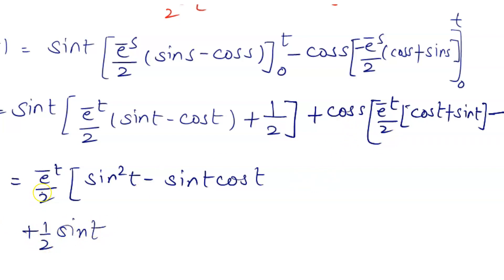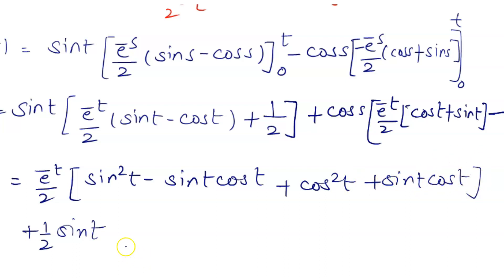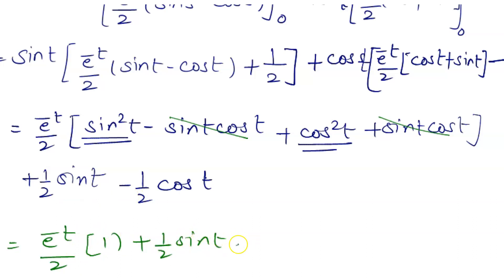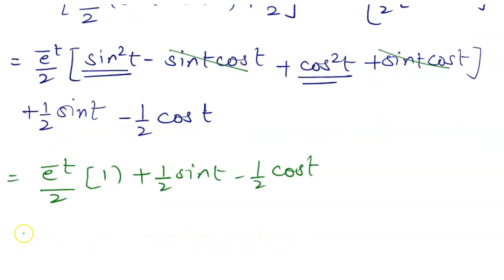Taking e^(-t)/2 as common, the remaining terms simplify using sin²θ + cos²θ = 1, so the e^(-t)/2 · (sin²t + cos²t) = e^(-t)/2 · 1 = e^(-t)/2. The cross terms sin(t)cos(t) cancel out. The remaining constant terms give 1/2·sin(t) - 1/2·cos(t).